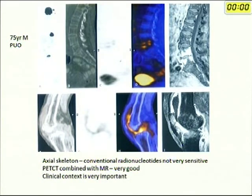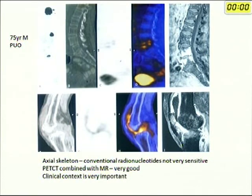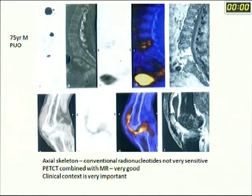Even in a patient with pyrexia of unknown origin, PET can help by showing unexpected sites of infection. In one case, the MR showed endplate changes and enhancement typical of osteomyelitis, and the patient also had joint involvement in the left knee. So PET-CT can also be used as an imaging tool in pyrexia of unknown origin.